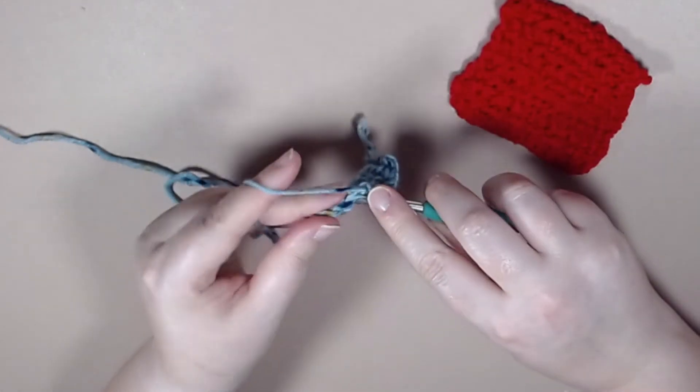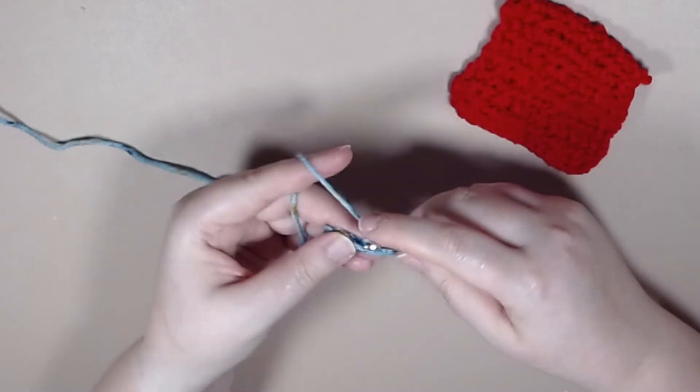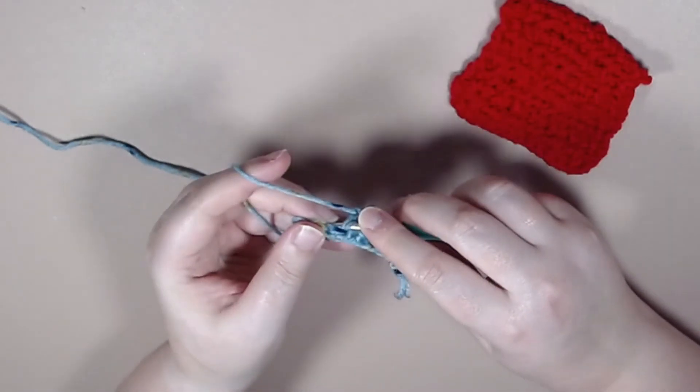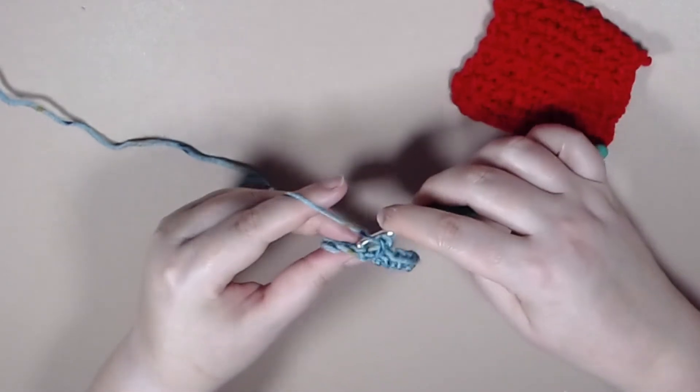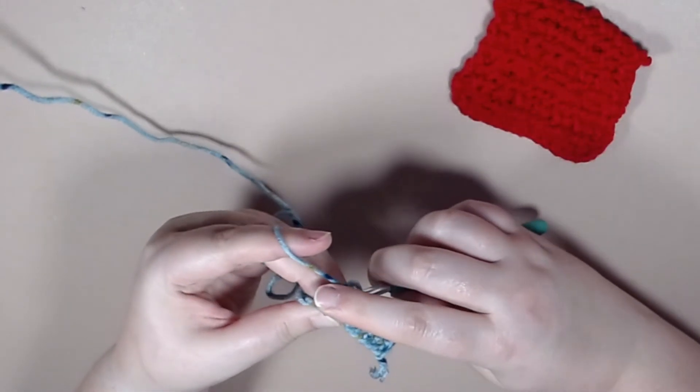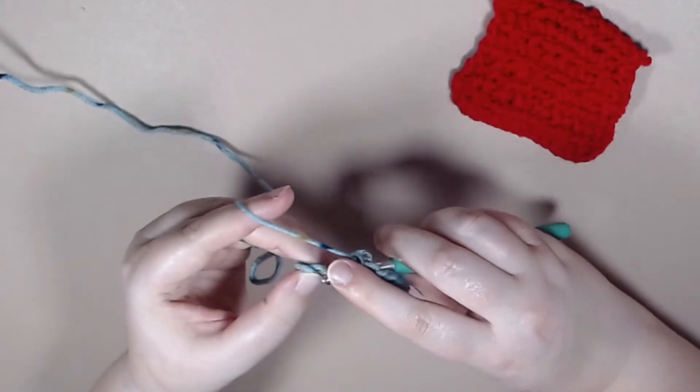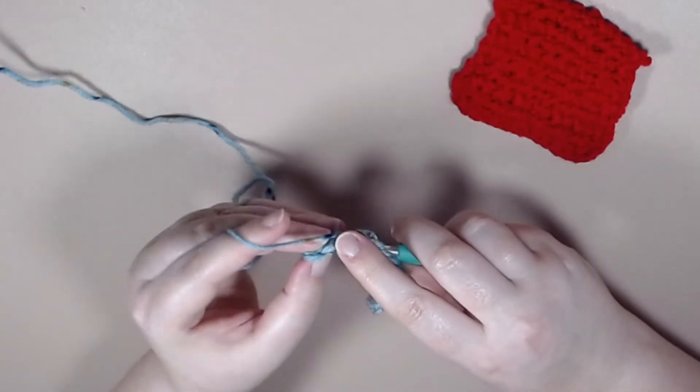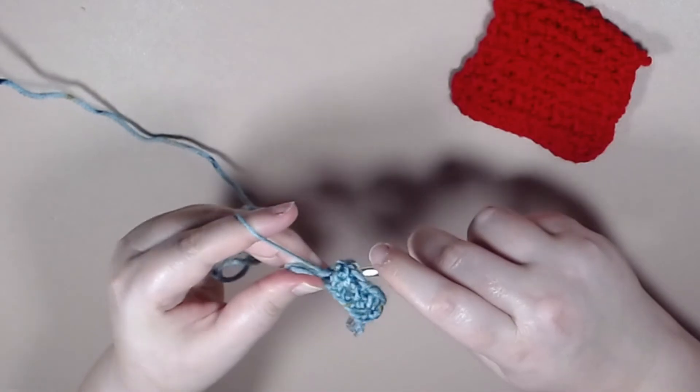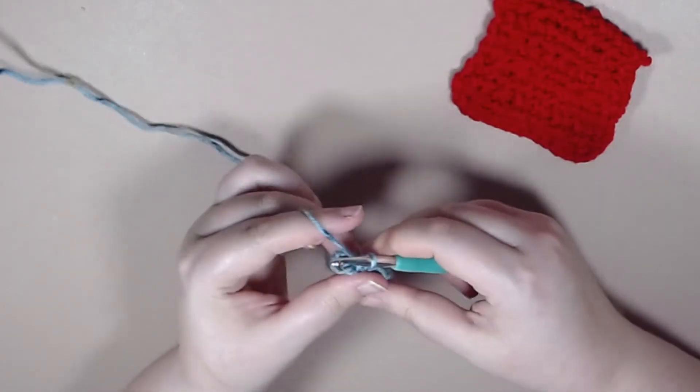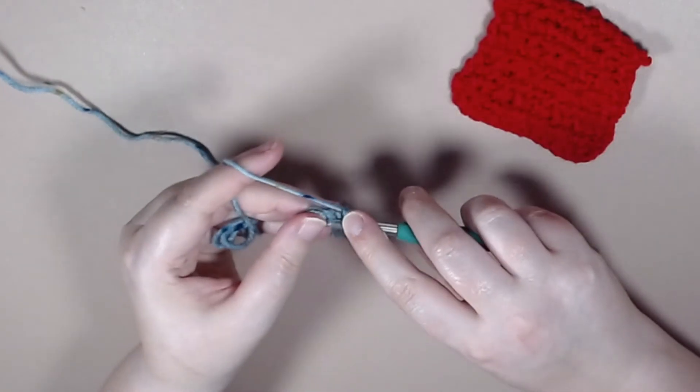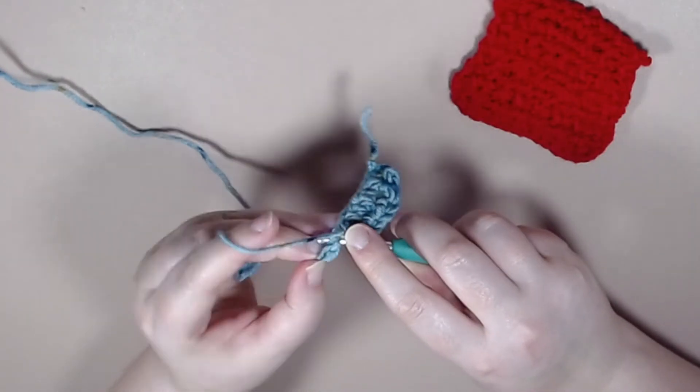A front post single crochet. And a back post single crochet. Now sometimes this can be a little bit confusing and stitches can be missed. So I definitely recommend for the first several rows of counting. And then once you start forming the pattern you'll start noticing what is correct and what isn't correct.